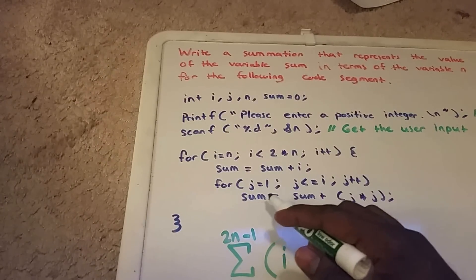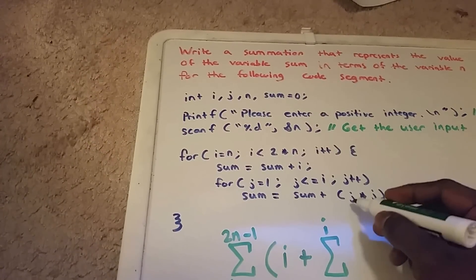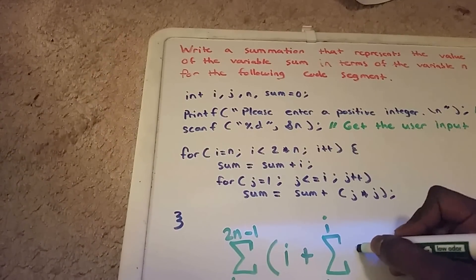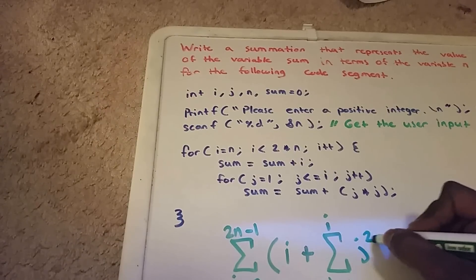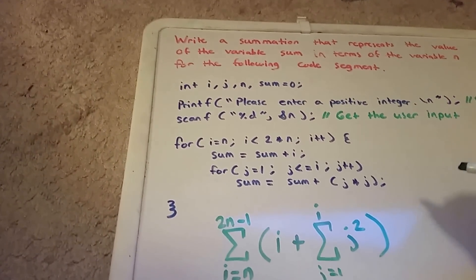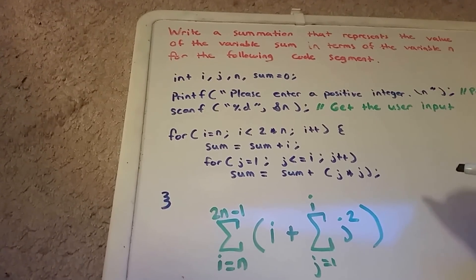Our sum is going to be j times j, that's j squared. And there we go, that would be our summation that represents the value of the variable sum.